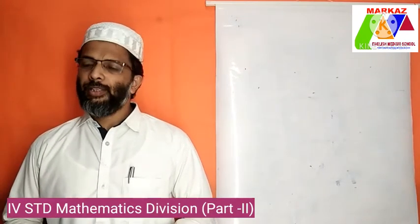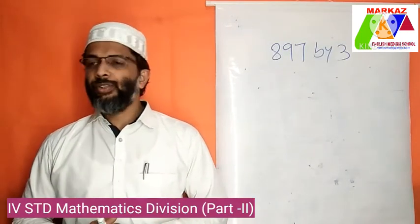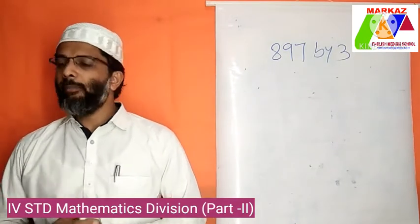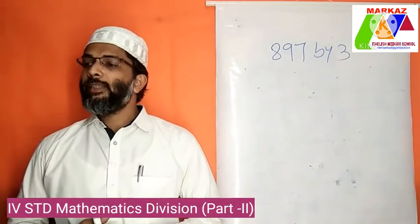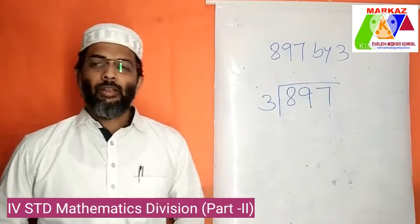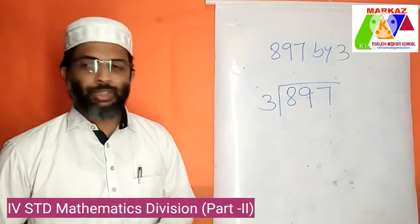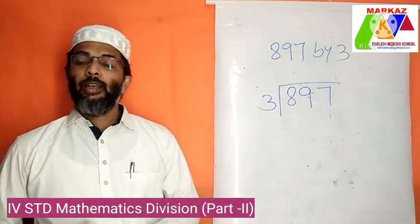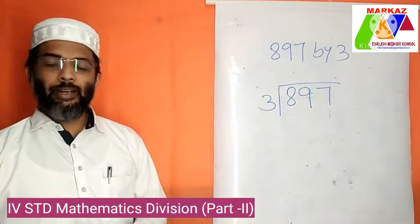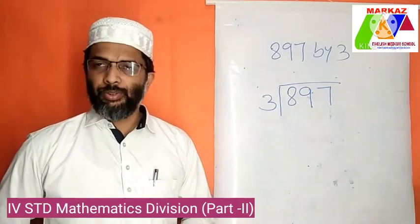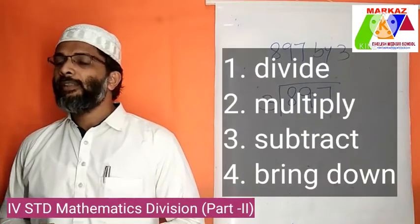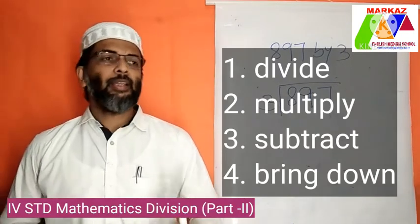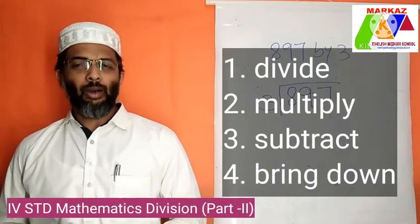Divide 897 by 3. How do we divide this number? Here we have the dividend which is a 3-digit number and the divisor which is a single-digit number. Consider the 1st digit of the dividend which is 8, then start your division steps. In division there are 4 steps: 1st divide, 2nd multiply, 3rd subtract, 4th bring down.